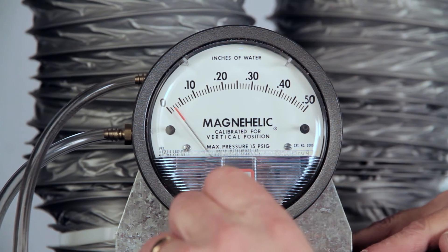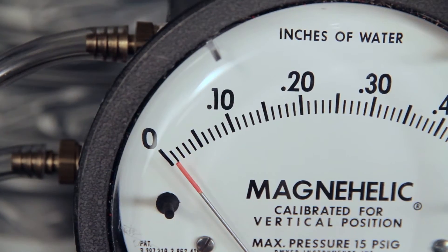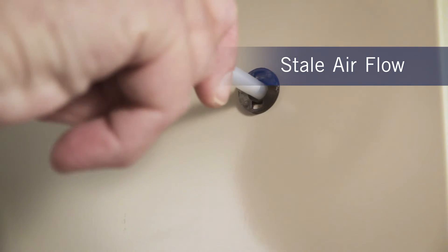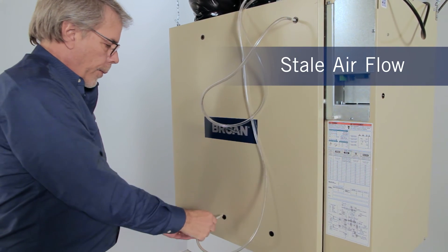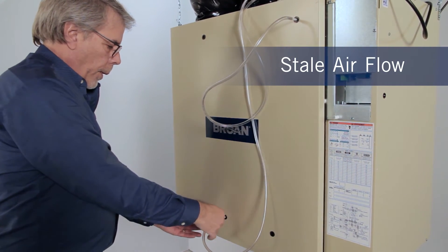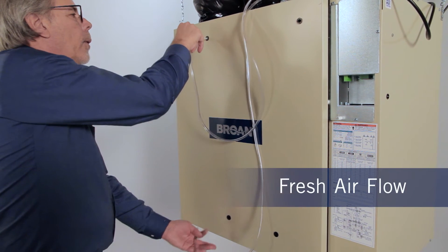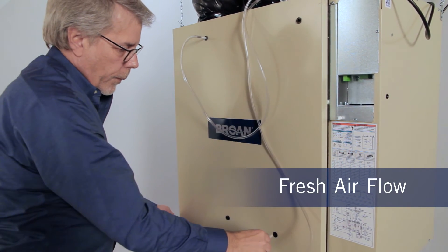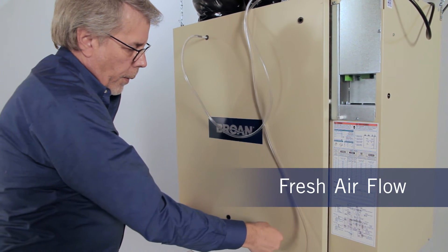Place the pressure gauge on a level surface and adjust it to zero. According to the airflow to be measured, connect tubing from gauge to stale airflow or the fresh airflow pressure tap. Be sure to connect the tubes to their appropriate high-low fittings. If the gauge drops below zero, reverse the tubing connections.